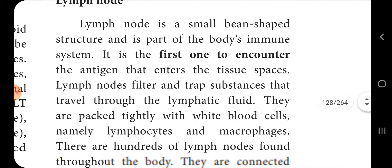The first example is the lymph node. A lymph node is a small bean-shaped structure and is part of the body's immune system. It is the first to encounter the antigen that enters the tissue spaces. Lymph nodes filter substances that travel through the lymphatic fluid. They are packed tightly with white blood cells, namely lymphocytes and macrophages. There are hundreds of lymph nodes found throughout the body.